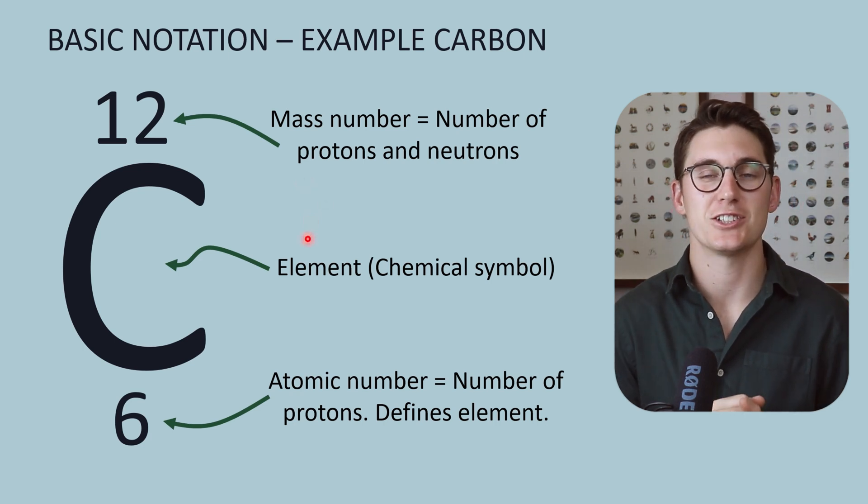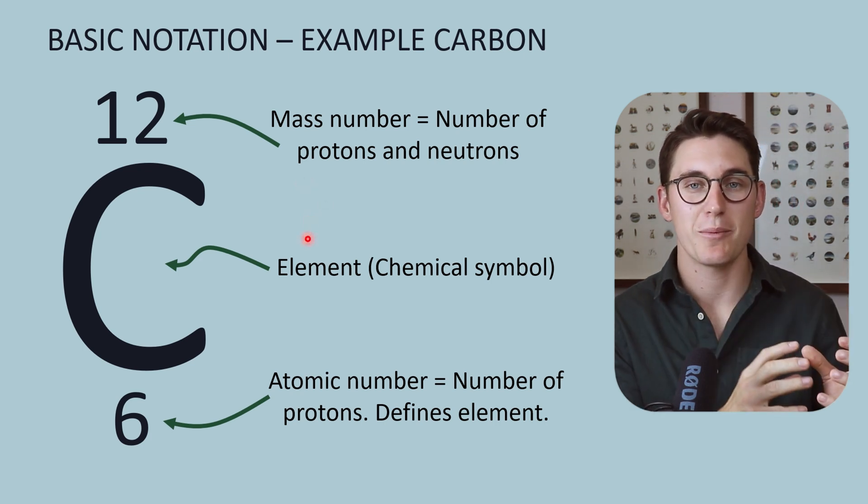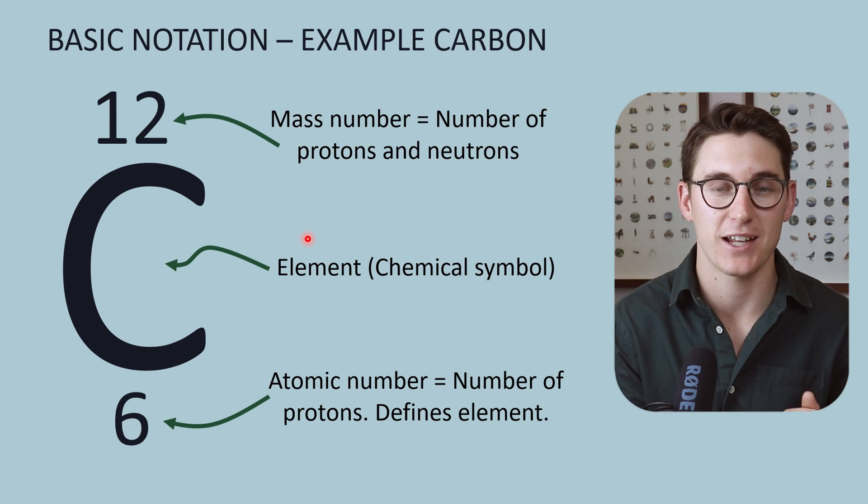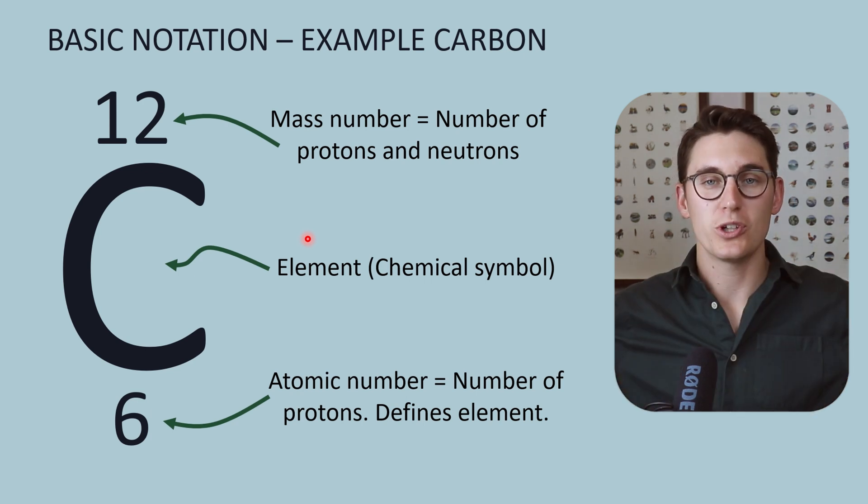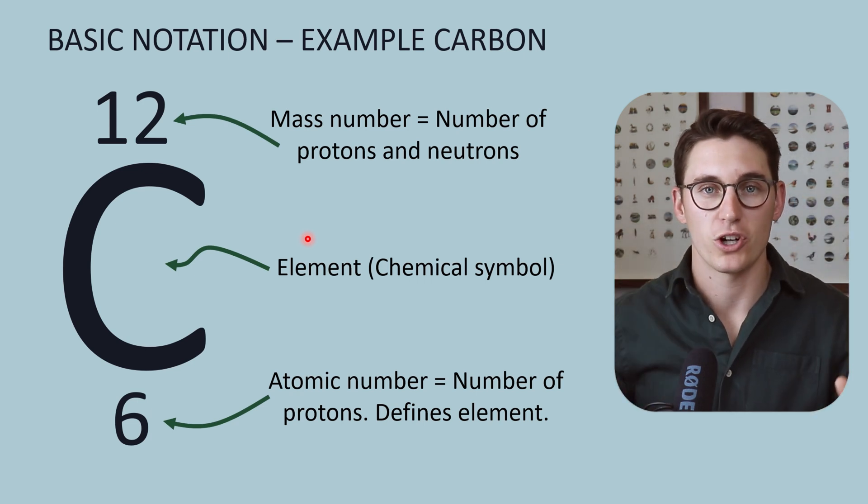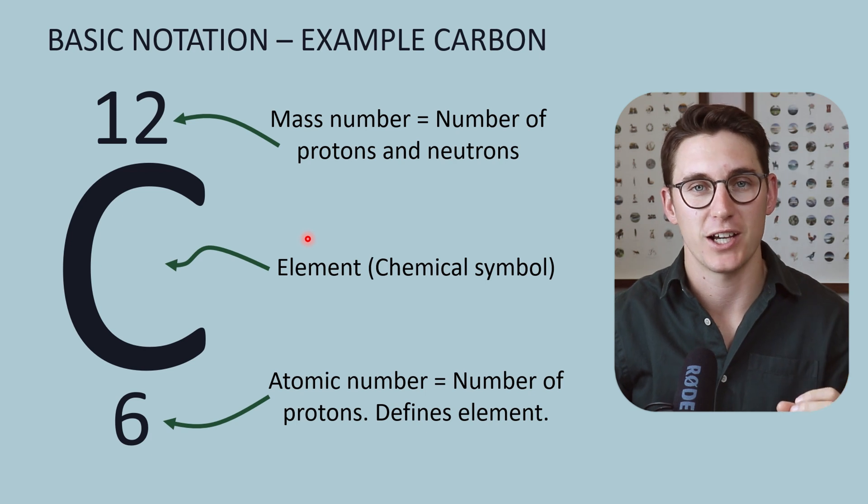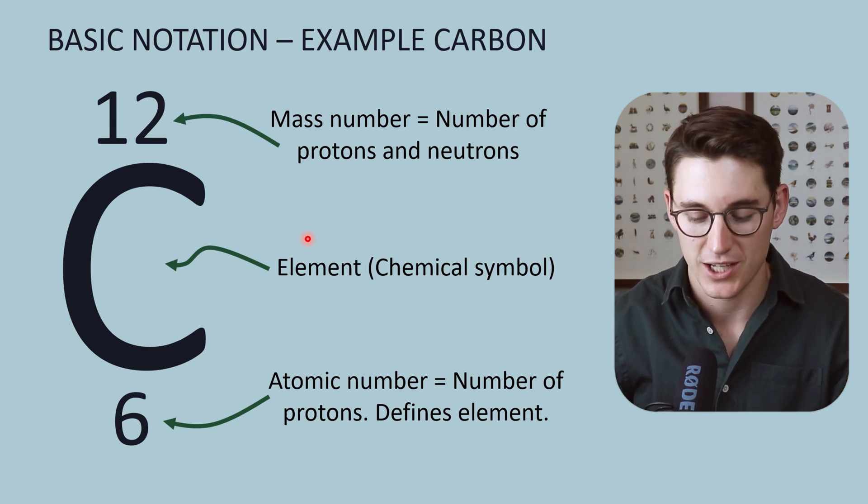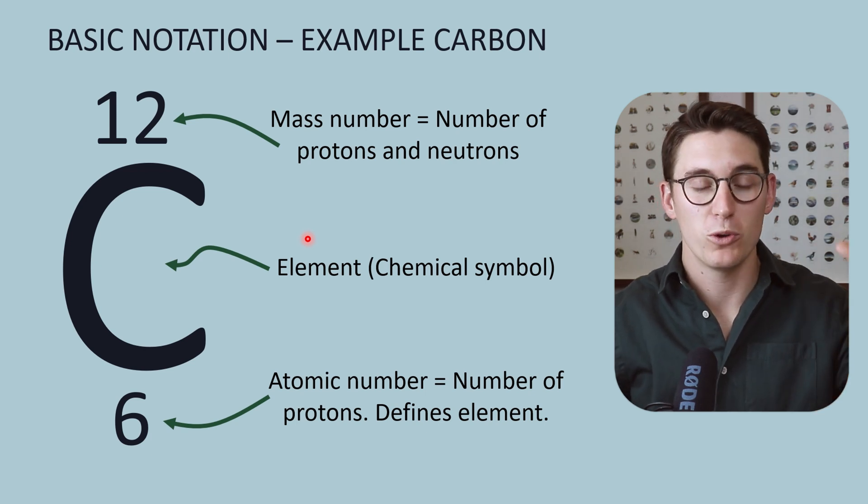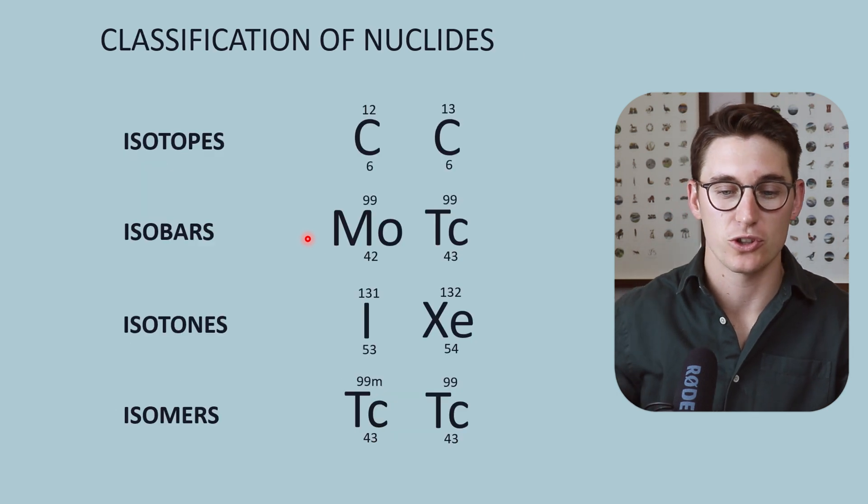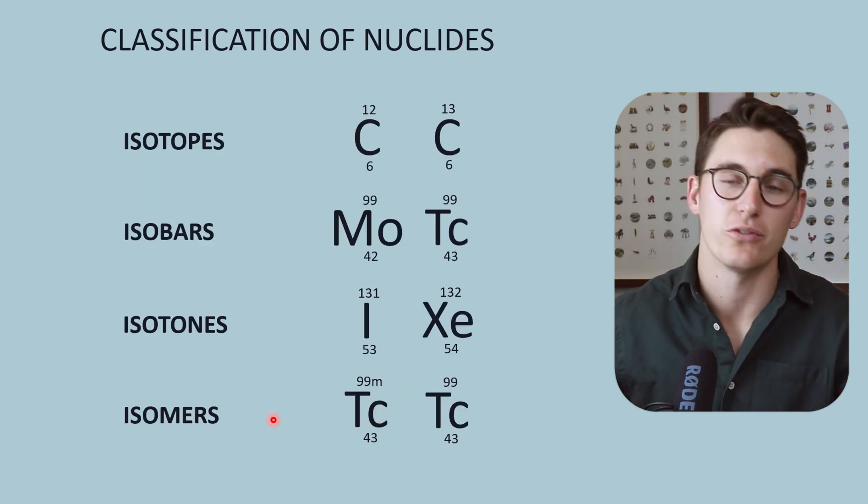This is what's known as an isotope. When we are describing atoms or elements within our universe, we call those nuclides. That's the broad overarching term. We can subdivide nuclides into multiple different categories, and throughout this course we'll be using these names. It's useful to know the classification of nuclides.